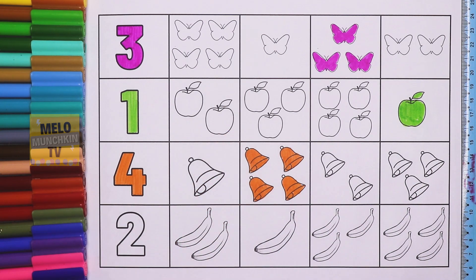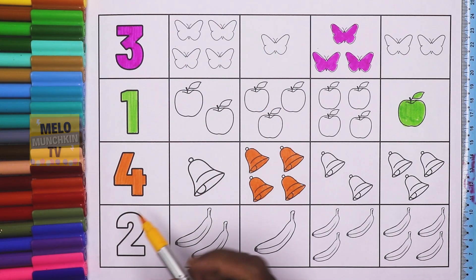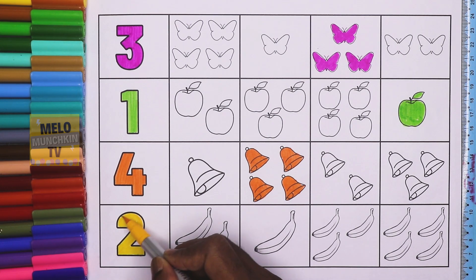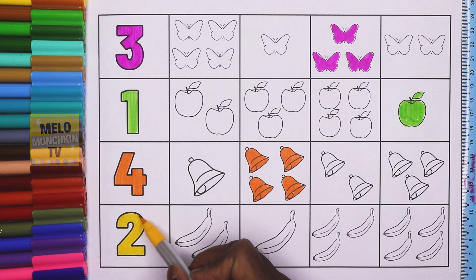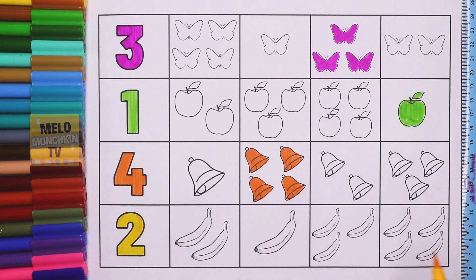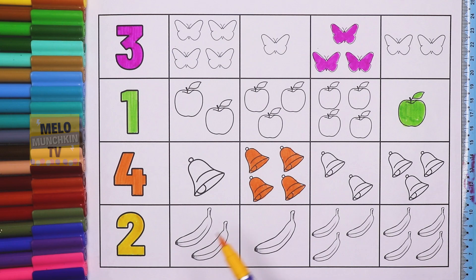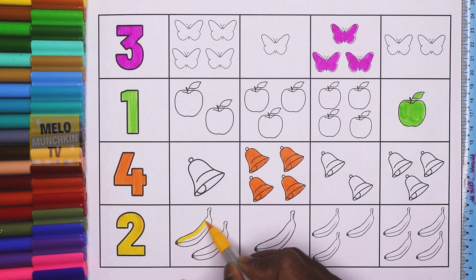Next I'll take yellow color to color number 2 — two, T-W-O. This is number 2, so I need to find the box with only two bananas. The first box checked has four bananas: 1, 2, 3, and 4. The next has 1, 2, and 3. Another has only one banana. And the first box has two bananas: 1 and 2 — so I'll color that one.